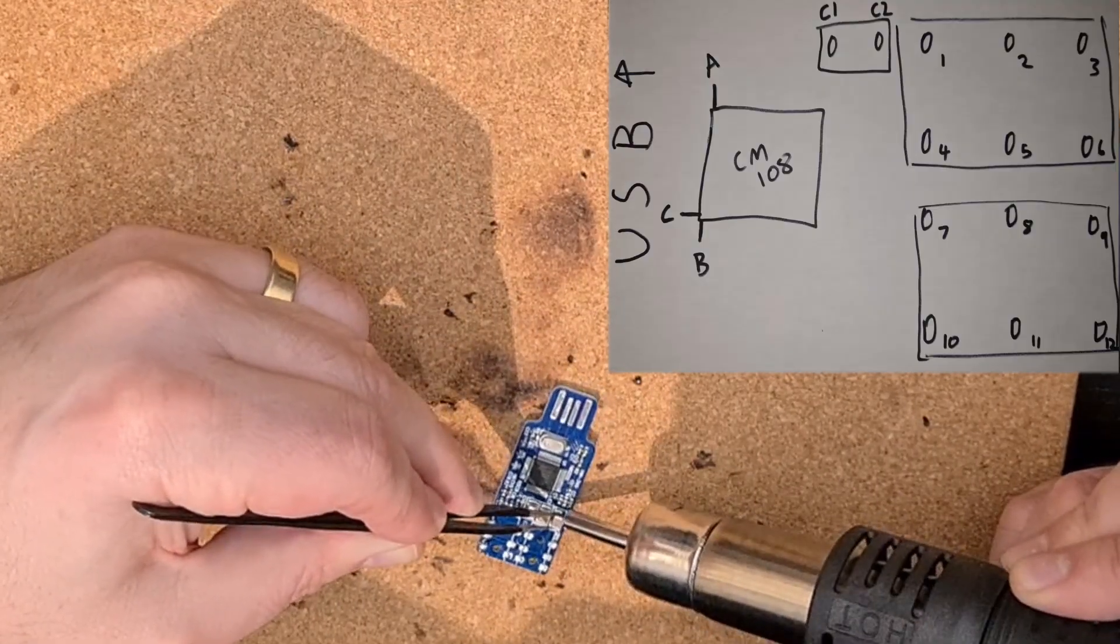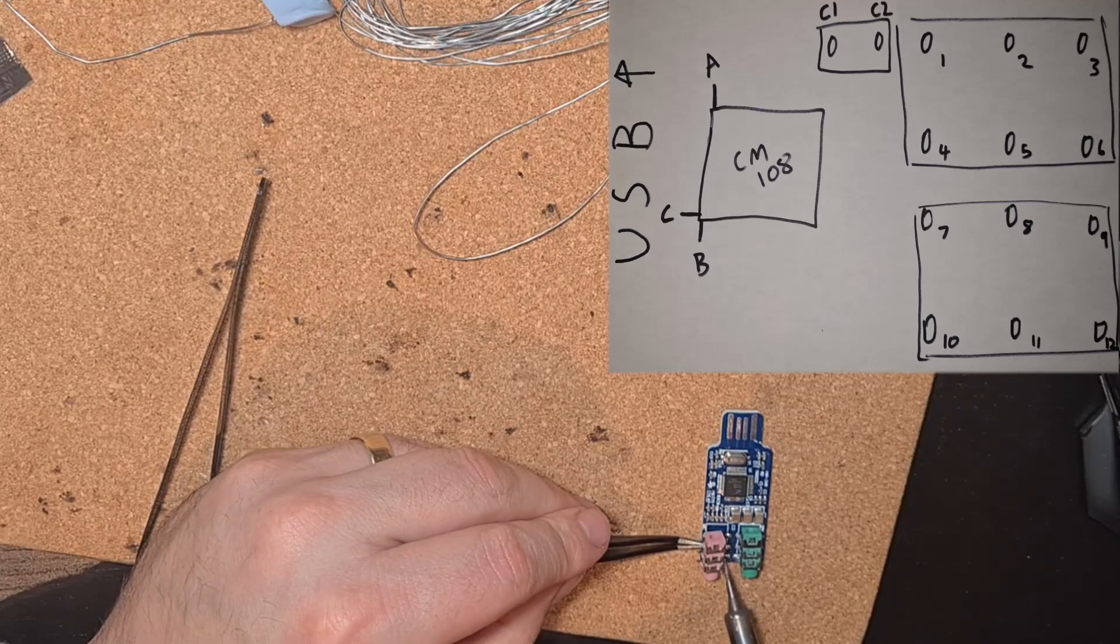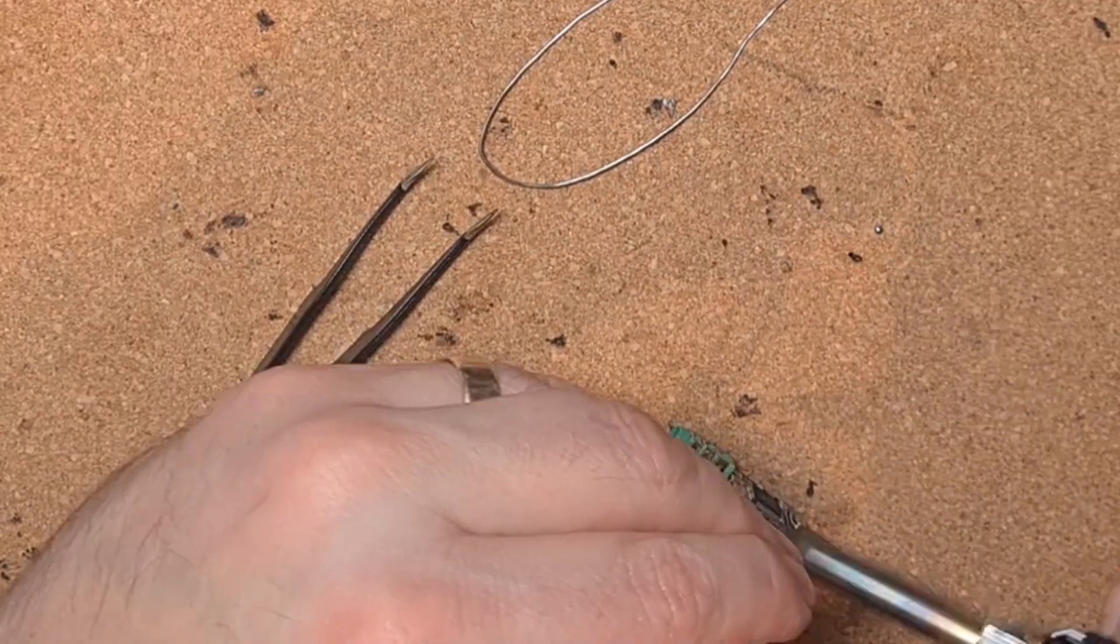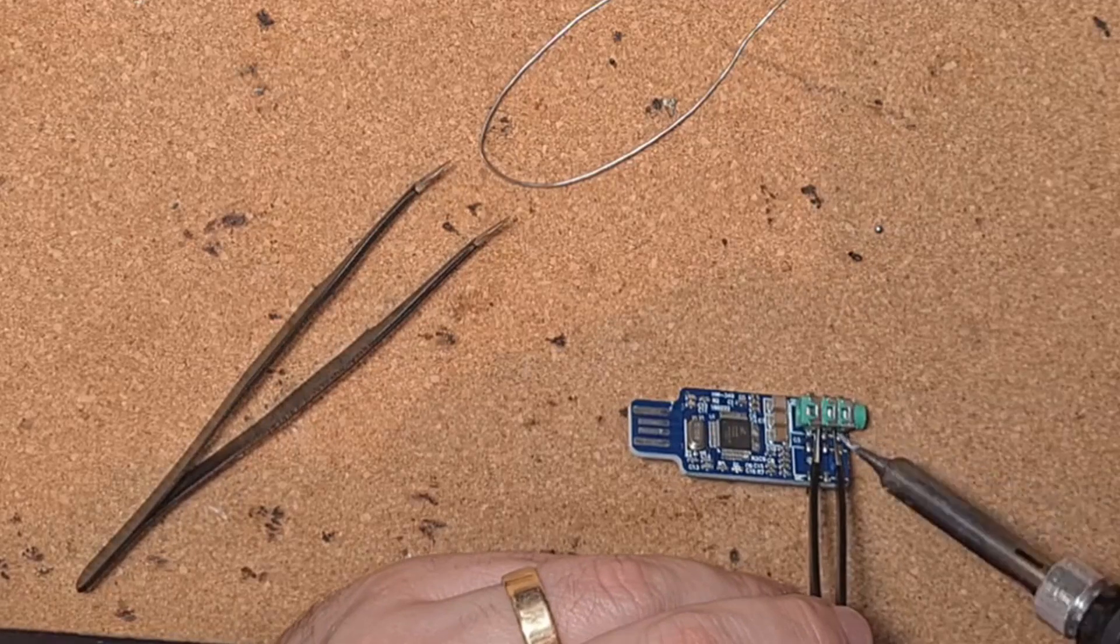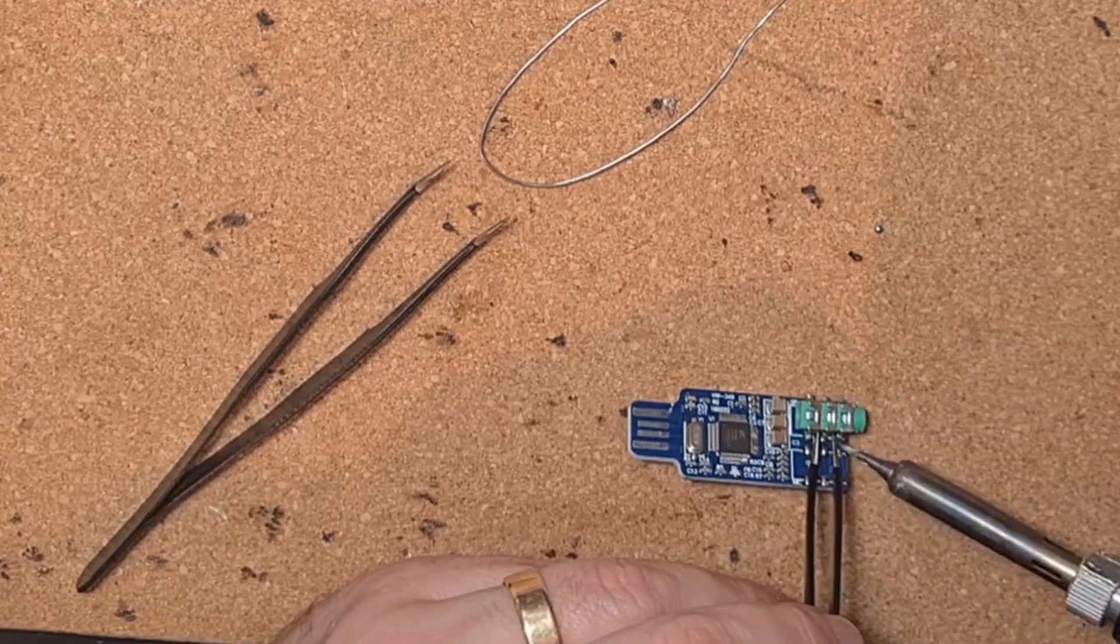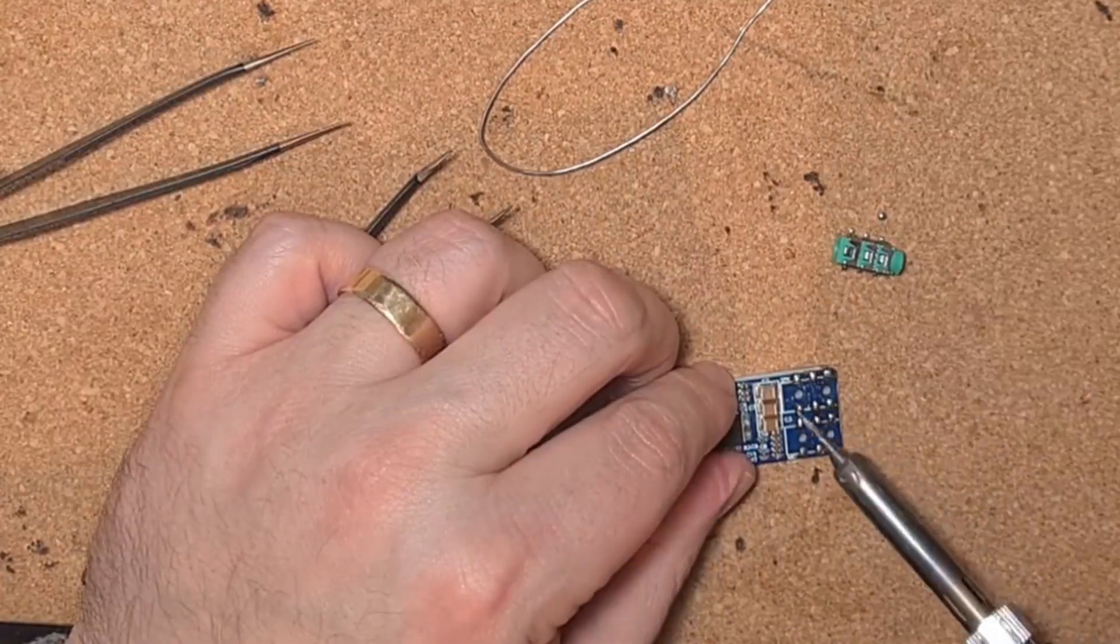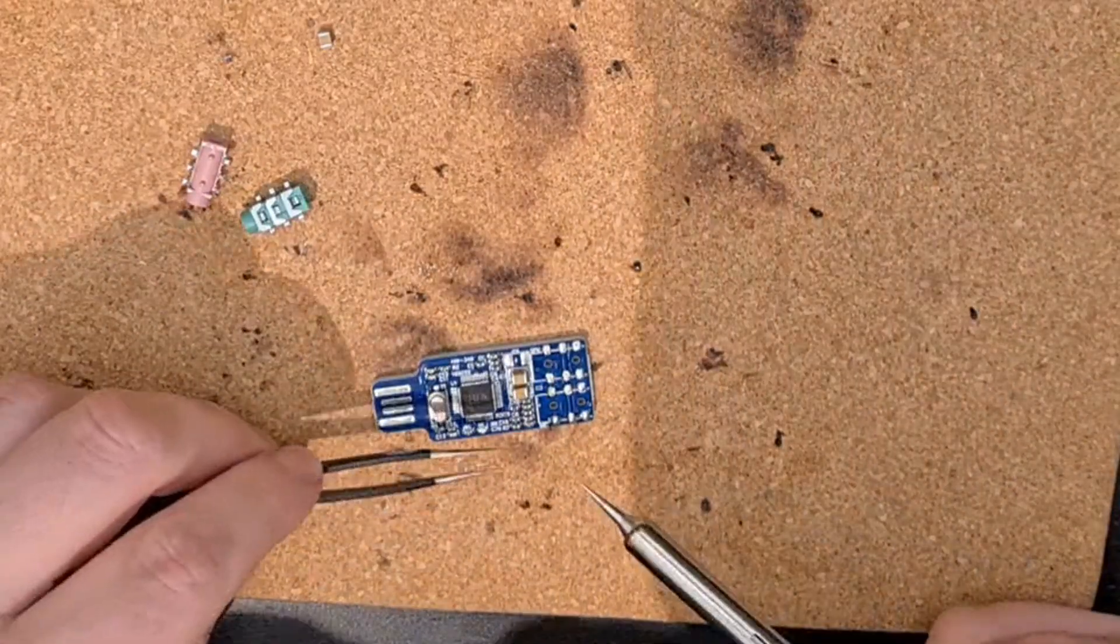I'm also removing that capacitor there that's bridging C1 and C2. The capacitor is actually labeled on the board as C2 and you need to get rid of that. This is me doing it with a soldering iron. It's a lot more fiddly and you've got to be really careful that you don't pull too hard and actually rip the tracks off the chip itself. Go really easy, really slow, but it is possible, although I would far prefer using a heat gun.